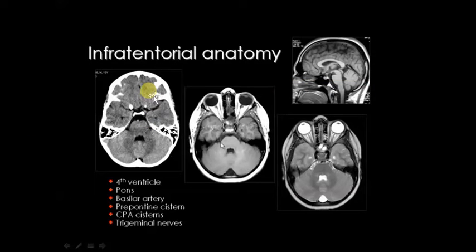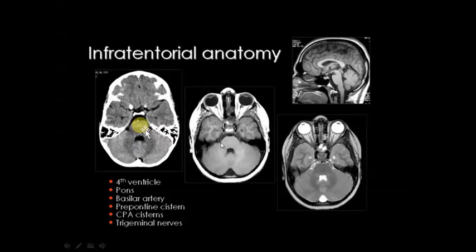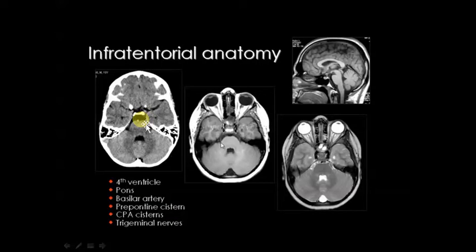If you see this large fourth ventricle, then in front of that large fourth ventricle the structure is the pons. In front of the pons, this black structure is called the prepontine cistern — one of the largest cisterns in the brain. This cistern extends laterally to the right and left; that is called the CPA cistern, or cerebellopontine angle cistern. Another name for it is the ambient cistern.